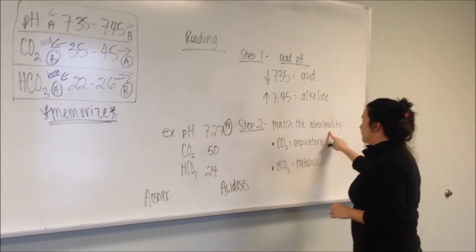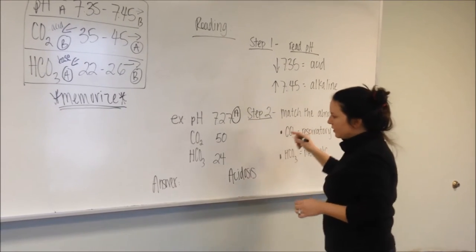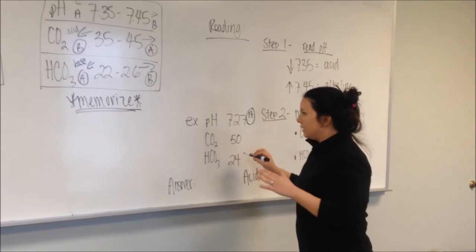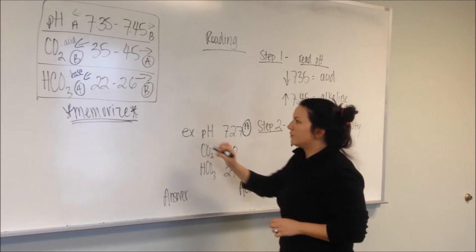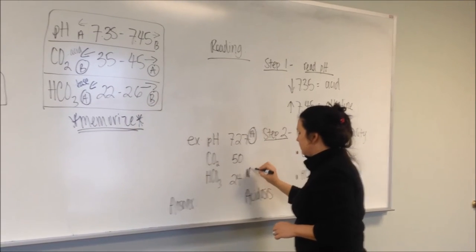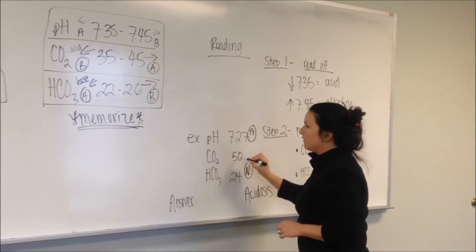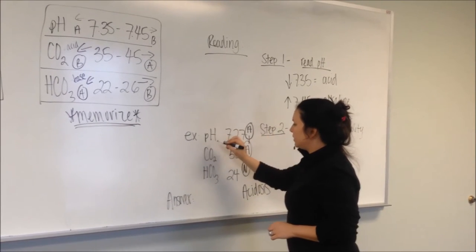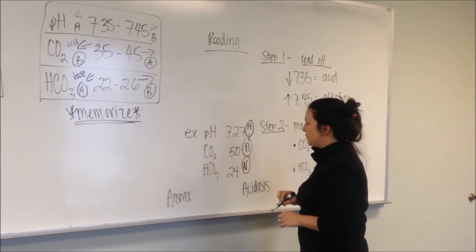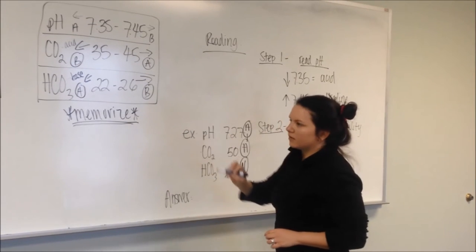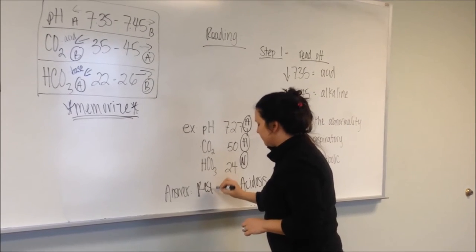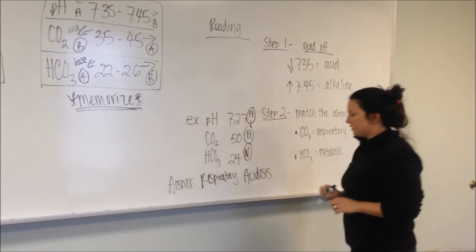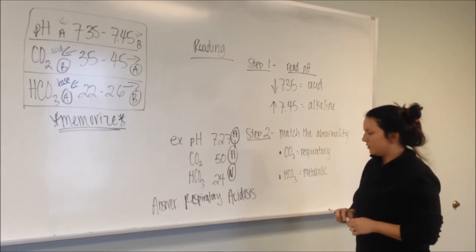Step two, match the abnormality. I'm going to start bottom up this time. HCO3, the baking soda, the base, 24. That's within normal range. 50 is above 45, so therefore it's an acid. So the pH and the CO2 are both abnormal. The CO2 came from my lungs, so it's respiratory. So my patient is in respiratory acidosis.